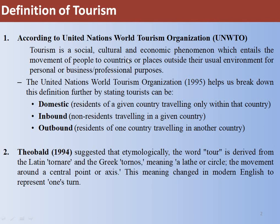Tourism is where people move from one place to another for personal or professional purposes. From the UNWTO definition, tourists are categorized under three types. The first is Domestic, which refers to a resident of a given country traveling only within that country. For example, if we travel within India, we are called Domestic Tourists. The second is Inbound Tourist — non-residents traveling in a given country. For example, any person other than Indian who is traveling to India is called an Inbound Tourist.